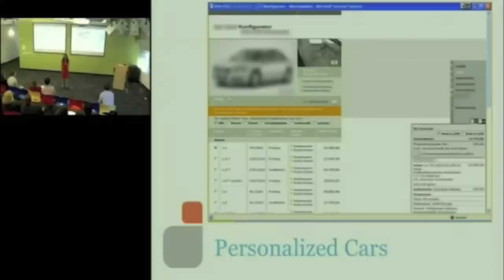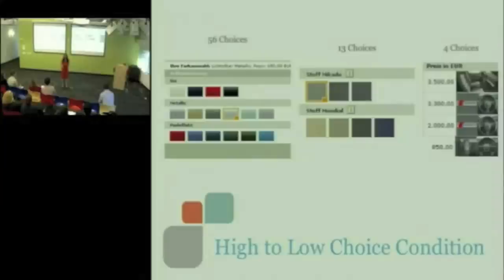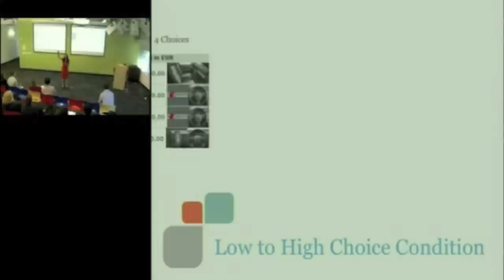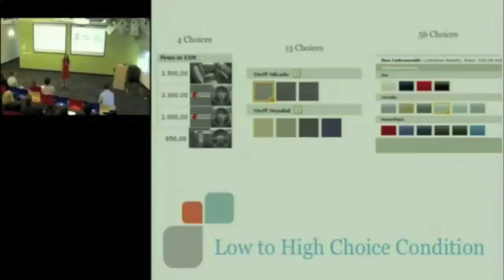So here's what they agreed to do. They varied the order in which the decisions were presented. So half the customers went from high choice decisions, 56 car colors, to low choice decisions, four gear shifts. The other half went from low choice decisions, four gear shifts, to high choice decisions, 56 car colors. Notice that they're all seeing the same amount of choice. The experience ought to be identical. The amount of information that I'm asking them to shove into their brains is ultimately the same. But it will not be experienced in the same way.